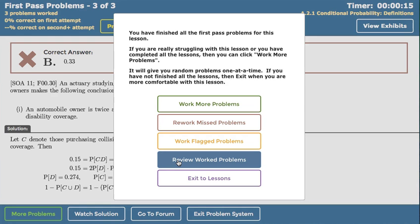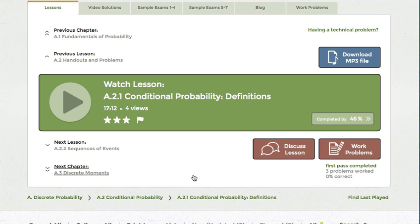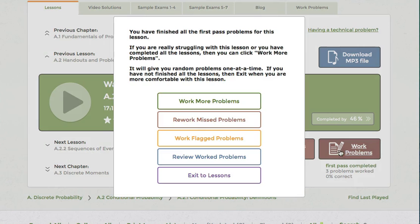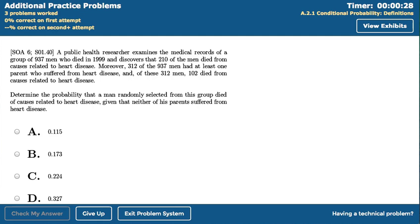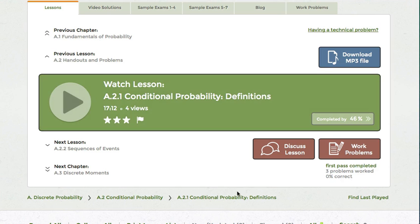If you exit the problem system, whenever you come back to the problems for this lesson, if you finish the first pass problems, you'll be offered these same options. If you haven't finished the first pass problems, then you'll just drop straight back in where you left off to keep working on those. Whether you're in the problem system or in the lesson window, you can always see how you're doing. Your up-to-the-minute stats are in the upper left corner of the problem system, and also here in the lower right of the lesson window, just below the problem system button.